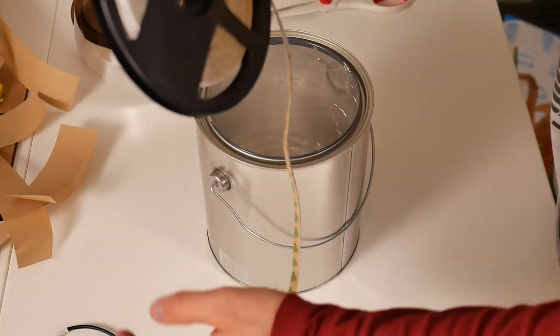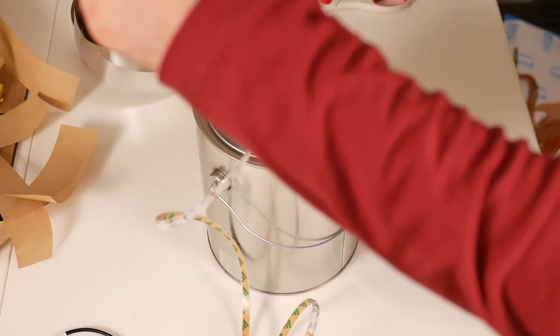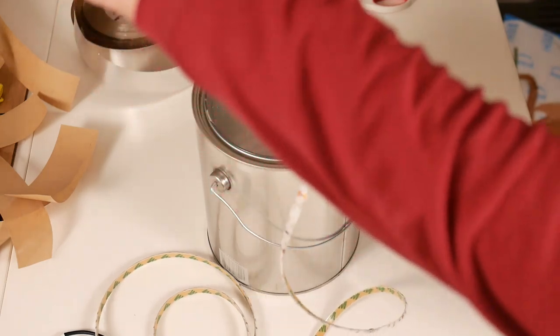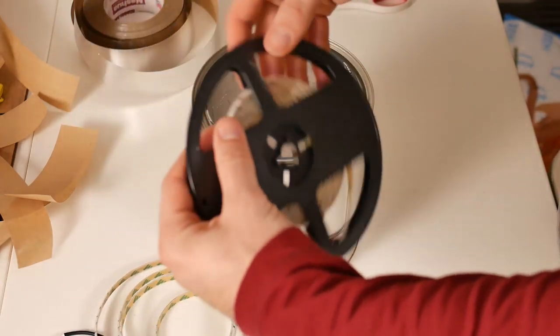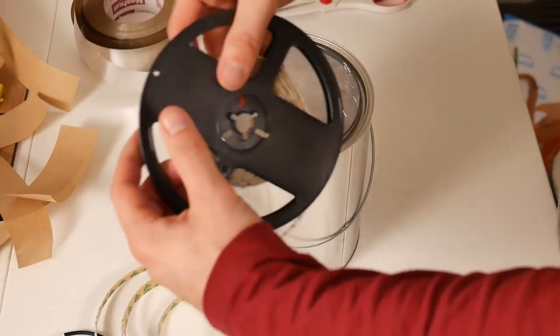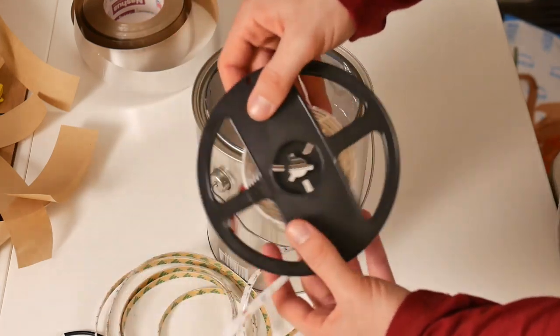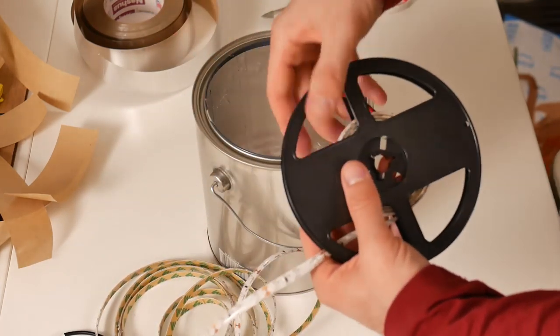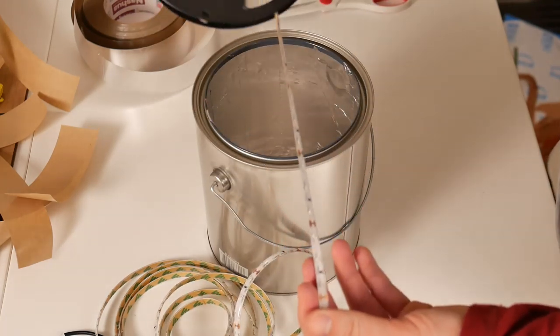So then you want to take your LEDs and unspool them. So you have a couple options here. I went ahead and drilled a hole in the bottom of the bucket to feed the plug through. Essentially you could just have the plug dangling over the top of the bucket. I figured for adhesion purposes and kind of cleanliness, it would look nicer to have it feeding out the bottom.